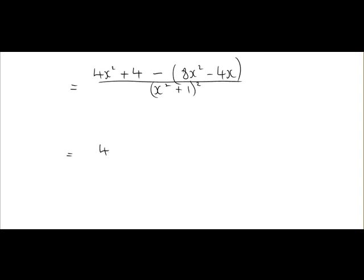So that leaves us with 4x² plus 4 minus 8x² minus by minus gives us plus 4x, all over x² plus 1 to be squared.